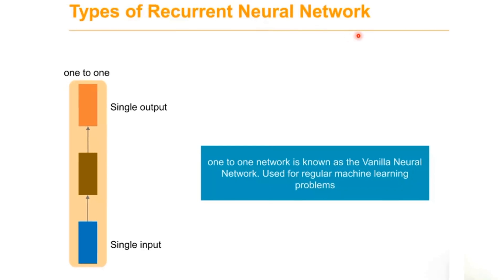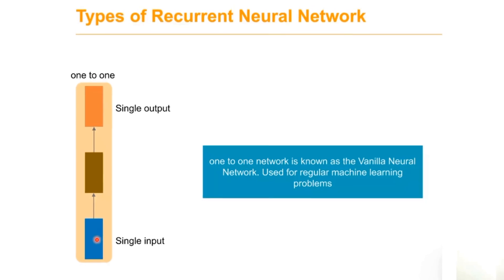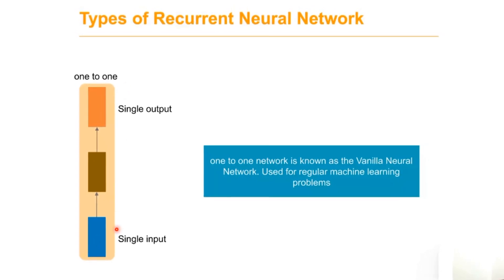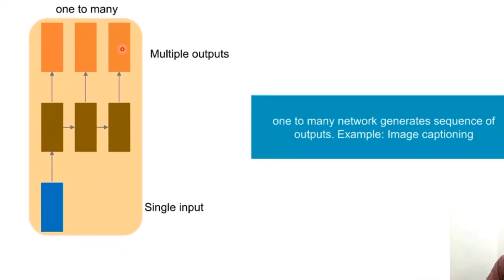There are various types of RNN. One-to-one is mainly used as a vanilla neural network for regular machine learning problems. One-to-many has one input and multiple outputs, mainly used for image captioning.